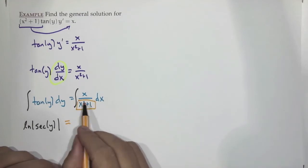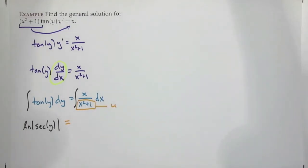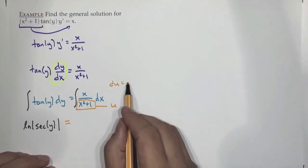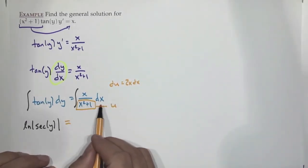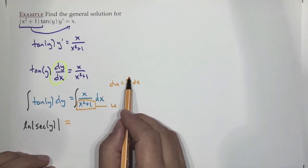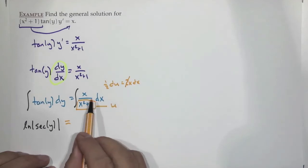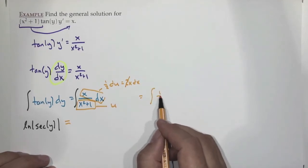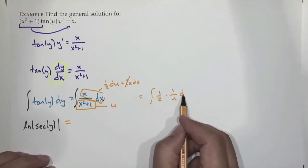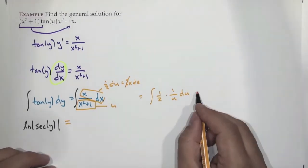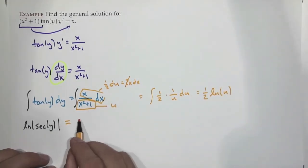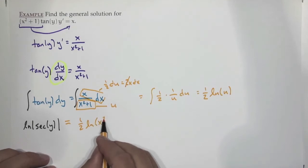The substitution gives us: u = x²+1, du = 2x dx, so x dx = (1/2)du. The integral becomes (1/2)∫(1/u)du = (1/2)ln|u| = (1/2)ln(x²+1). Are we missing anything? Plus C. We only need a constant on one side — if we had constants on both sides, they'd just merge into one constant.